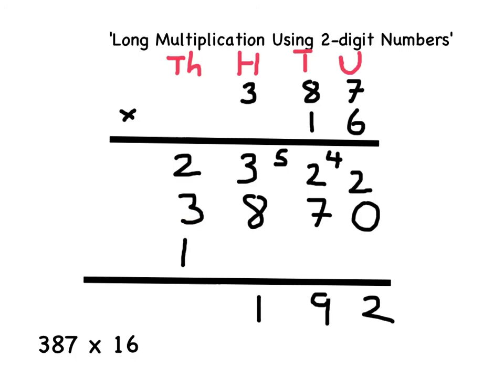2 add 3 add 1 equals 6, so there must be 6,000 in my answer. At the bottom of my long multiplication is the answer to the original question of 6,192.